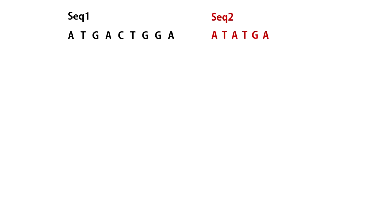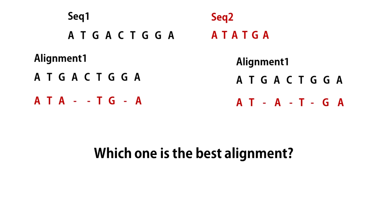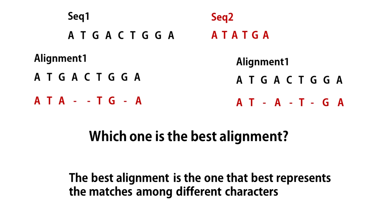Suppose you have two DNA sequences. You can align them in two different ways. Which one is the best alignment? The best alignment is the one that best represents the matches among different characters. So let us just define a matching algorithm.